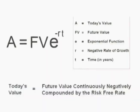Since you need $1,000 in six months, you need to find out what amount you would need to start with today so that it will grow into $1,000 six months from now at the rate of 1.5% continuously compounded. To do this, one takes the future value of $1,000 and negatively compounds by the risk-free rate of 1.5%. This is called discounting to present value. Today's value equals the future value continuously negatively compounded by the risk-free rate.